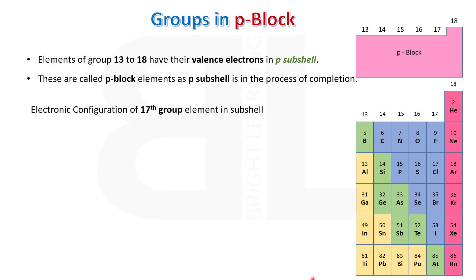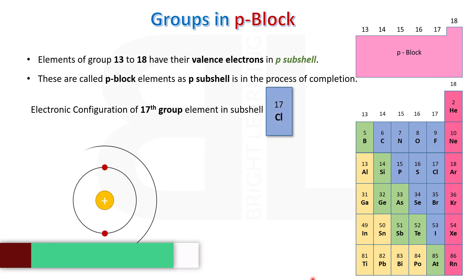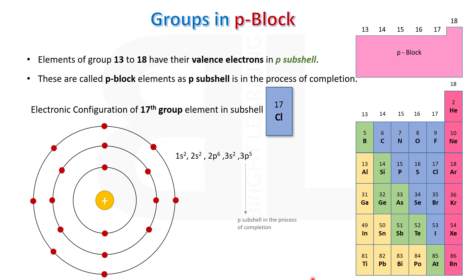Similarly, when we write the electronic configuration of a 17th group element such as chlorine with atomic number 17, we get the configuration 1s2, 2s2, 2p6, 3s2, 3p5. Again, in 17th group elements, P subshell is in the process of completion. So we conclude that all elements in P block, from group number 13 to group number 18, have their P subshell in the process of completion, and their valence electrons are filled in P subshell.